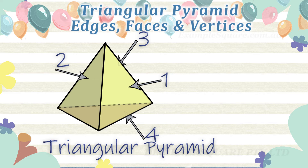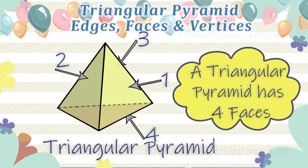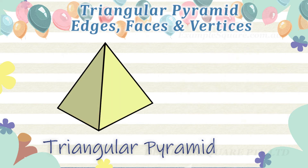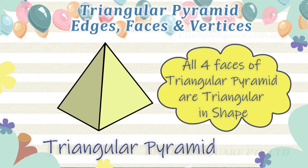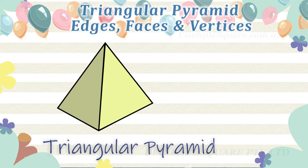A triangular pyramid has four faces. All the faces of a triangular pyramid are triangles, as the base is a triangle and the side faces of pyramids are always triangles.